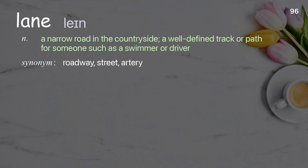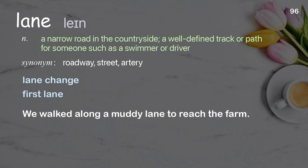Lane: a narrow road in the countryside; a well-defined track or path for someone such as a swimmer or driver. Examples: lane change, first lane. We walked along a muddy lane to reach the farm.